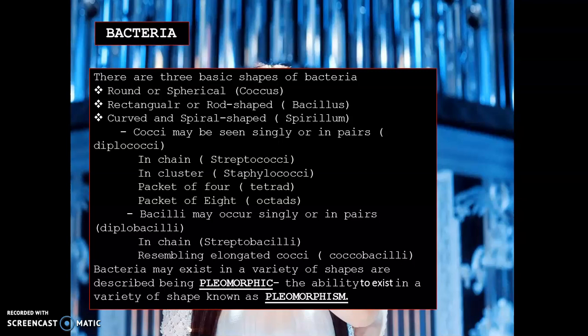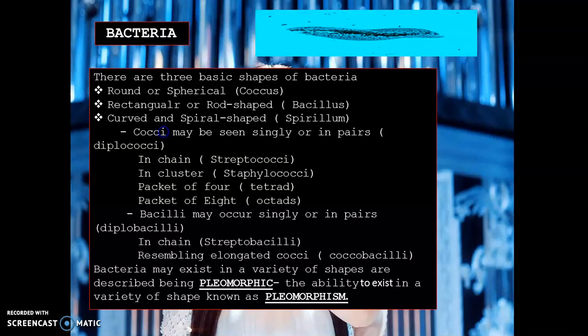The ability of bacteria to exist in a variety of shapes is described and called pleomorphic, and the ability itself is known as pleomorphism. Always take note of that.